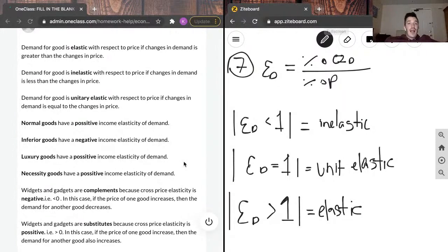He said that demand for good is elastic with respect to price change if changes in demand is greater than the changes in price. If change in demand, the numerator is greater than the change in price, it can be elastic because the equation will come out to be greater than 1.